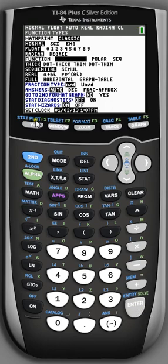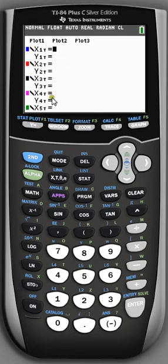So now when I hit the Y= key, which is where we input our functions typically, we see something very different than what we're used to. We have the function x of t and the function y of t, and each of these are based on the parameter time.